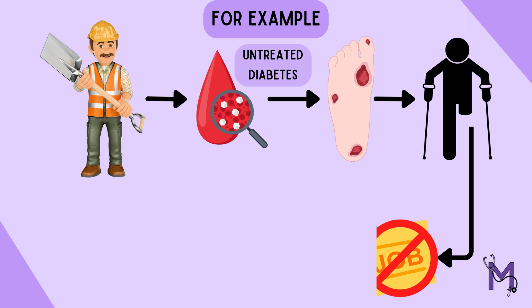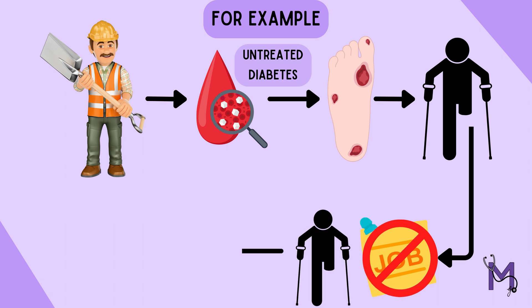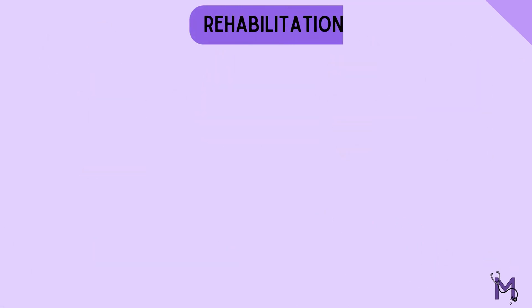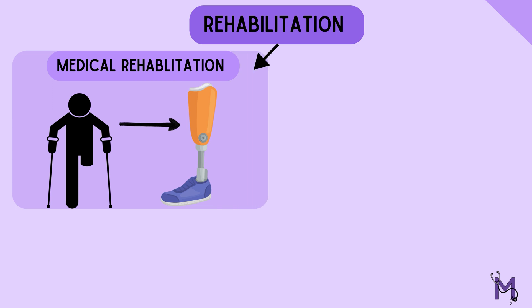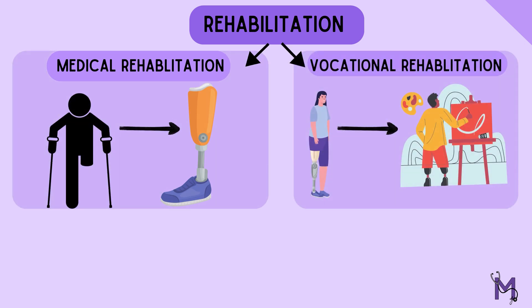Because of this disability, the patient cannot work and may become unemployed, leading to a handicap — a disadvantage caused by the disability. It is extremely necessary for the patient to undergo rehabilitation to prevent progression of the disability. This could include medical rehabilitation, where the patient is helped to restore the lost function, as well as vocational rehabilitation, which helps with restoration of the patient's capacity to earn his livelihood again.